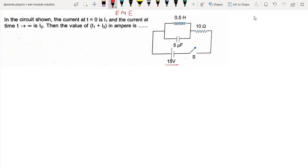The question is: in the circuit shown, the current at t equals 0 is I1, and the current at t equals infinity is I2. We have to find what the sum I1 plus I2 equals.